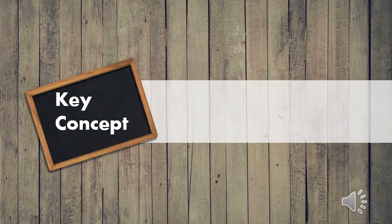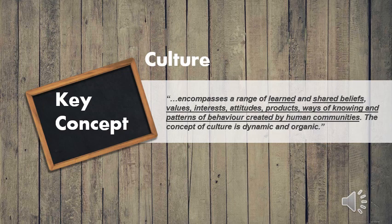Let's begin with the first concept: culture. According to what we have discussed in class and the main orientation of the IB materials, culture encompasses a range of learned and shared beliefs, values, interests, attitudes, products, ways of knowing, and patterns of behavior created by human communities. The concept of culture is dynamic and organic. Pay special attention to this word — dynamic — which, according to the Cambridge Dictionary, means continuously changing or developing. Don't forget about it, as it will serve as the basis for a further activity.